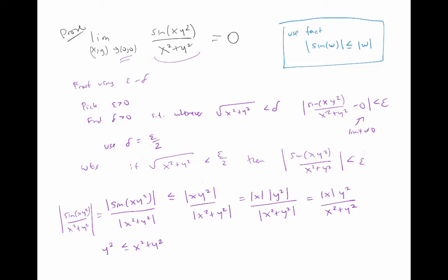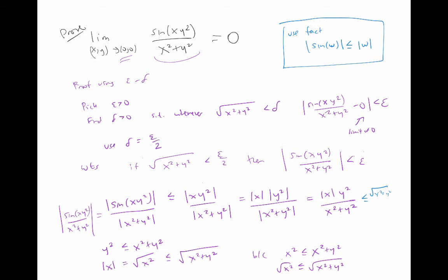We also know that |x| equals √(x²) is less than or equal to √(x²+y²), since x²≤x²+y². So going back, our expression is less than or equal to √(x²+y²)·(x²+y²)/(x²+y²), and the (x²+y²) terms cancel, leaving √(x²+y²). By assumption, √(x²+y²) < ε/2, so it's definitely less than epsilon. That finishes the epsilon-delta proof.